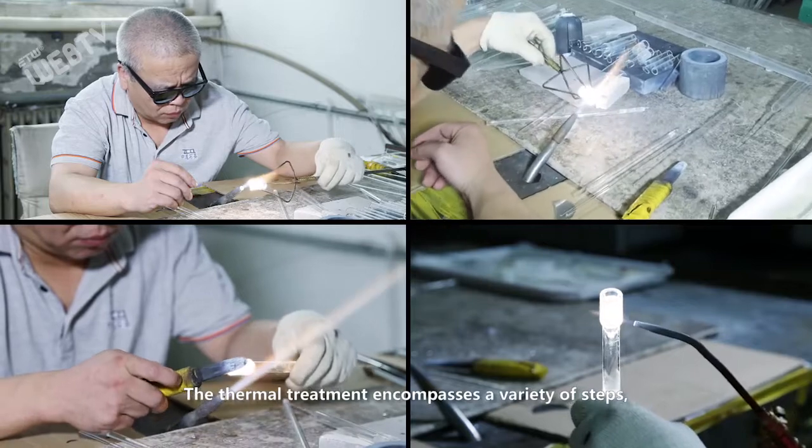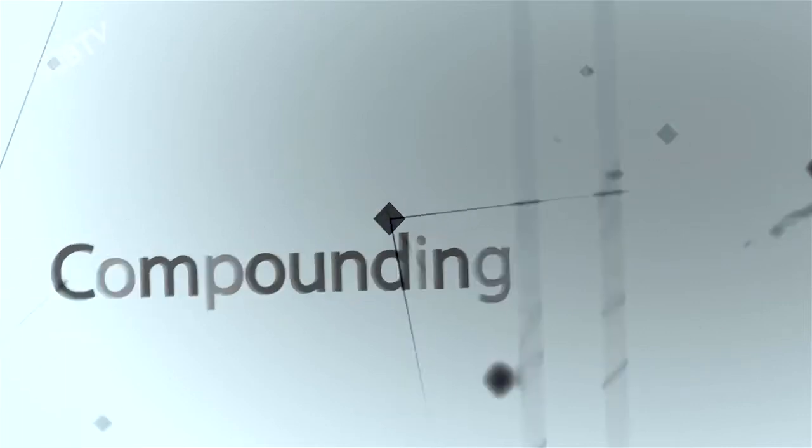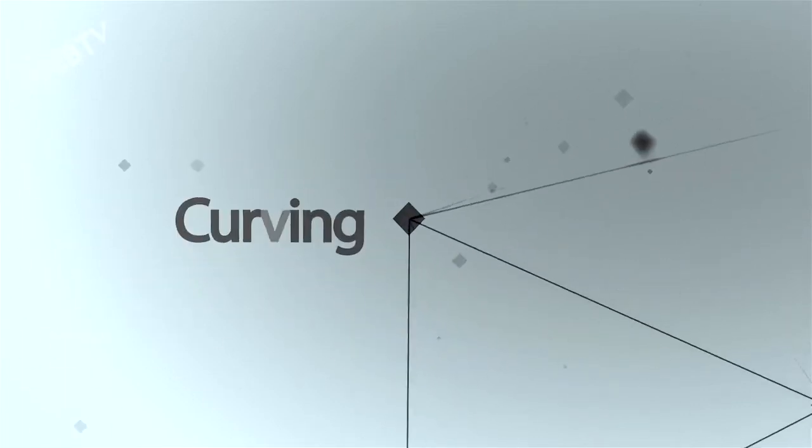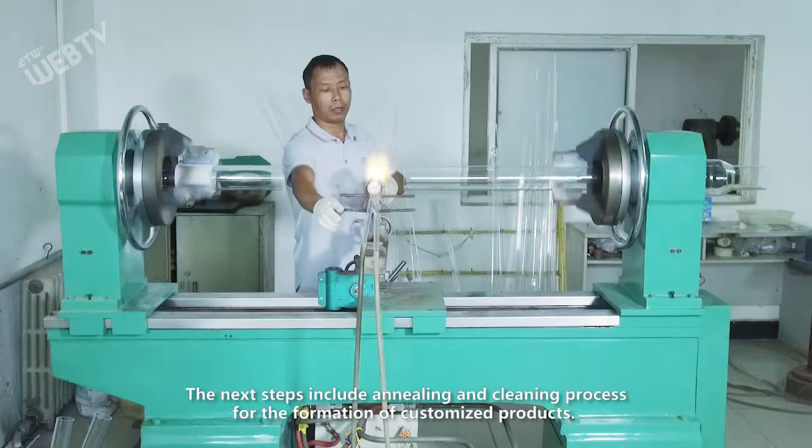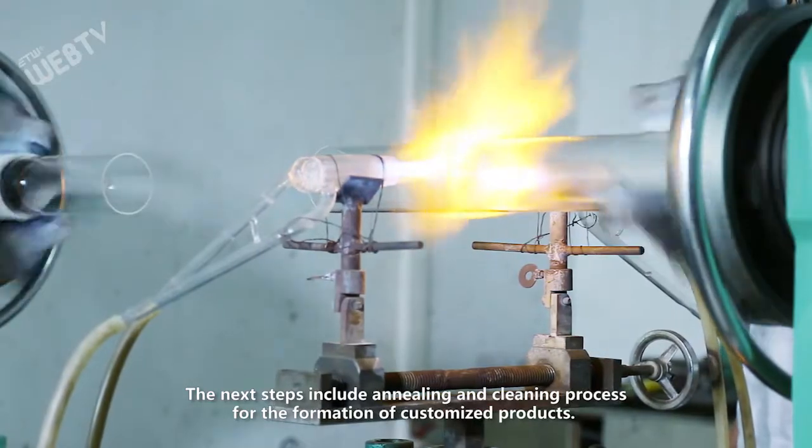The thermal treatment encompasses a variety of steps including forming, bending, compounding, bonding, and curving. The next steps include an annealing and cleaning process for the formation of customized products.